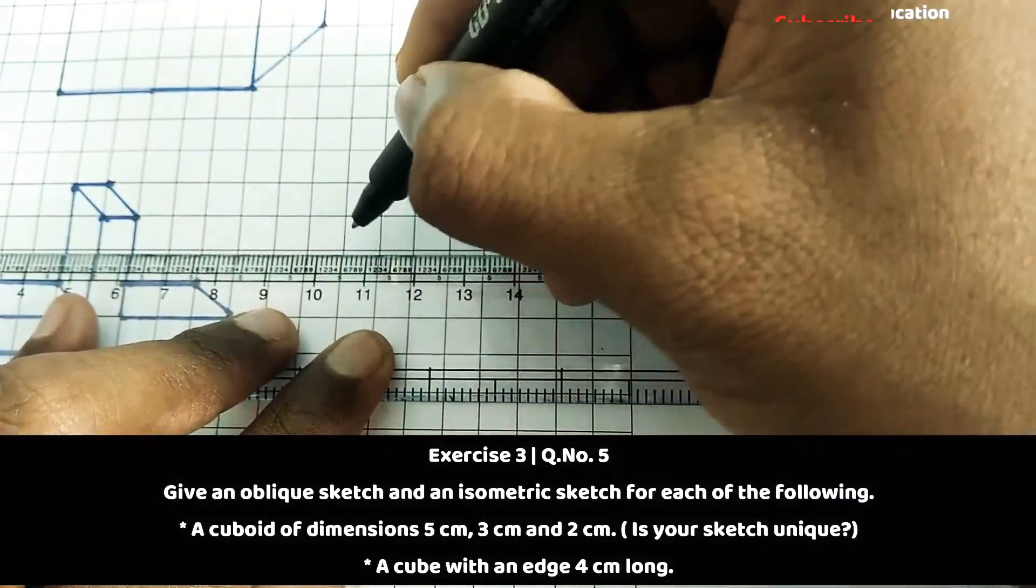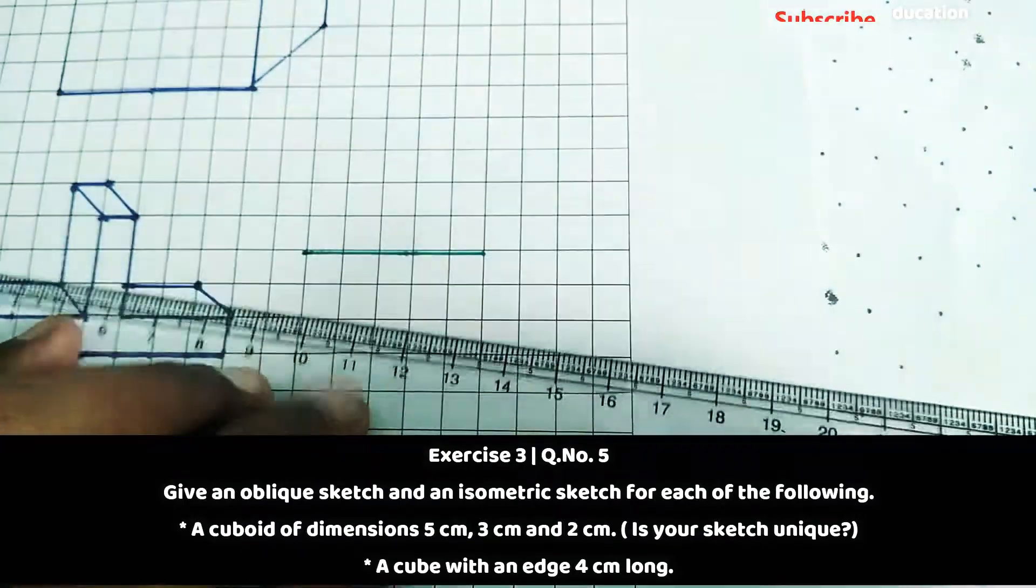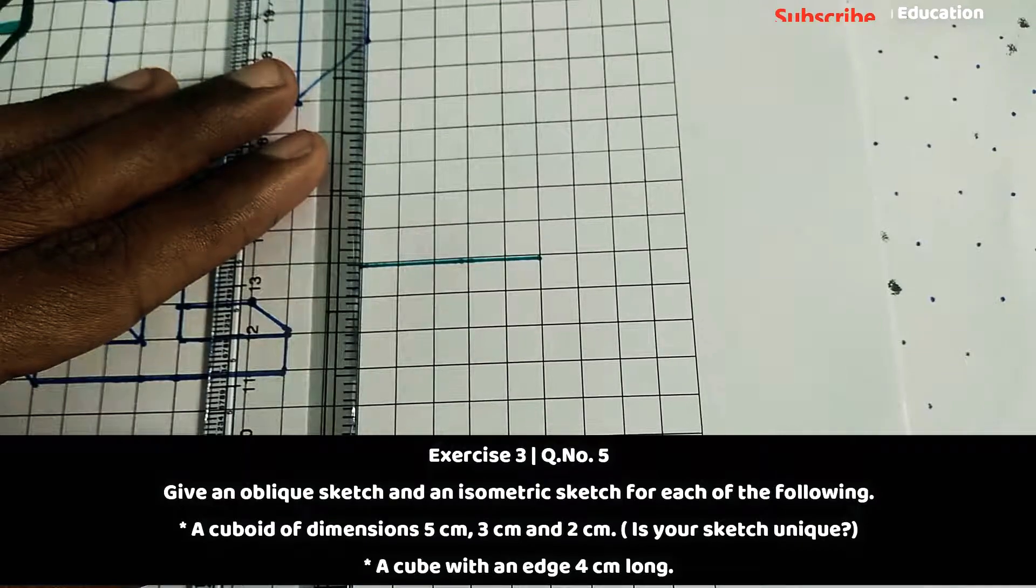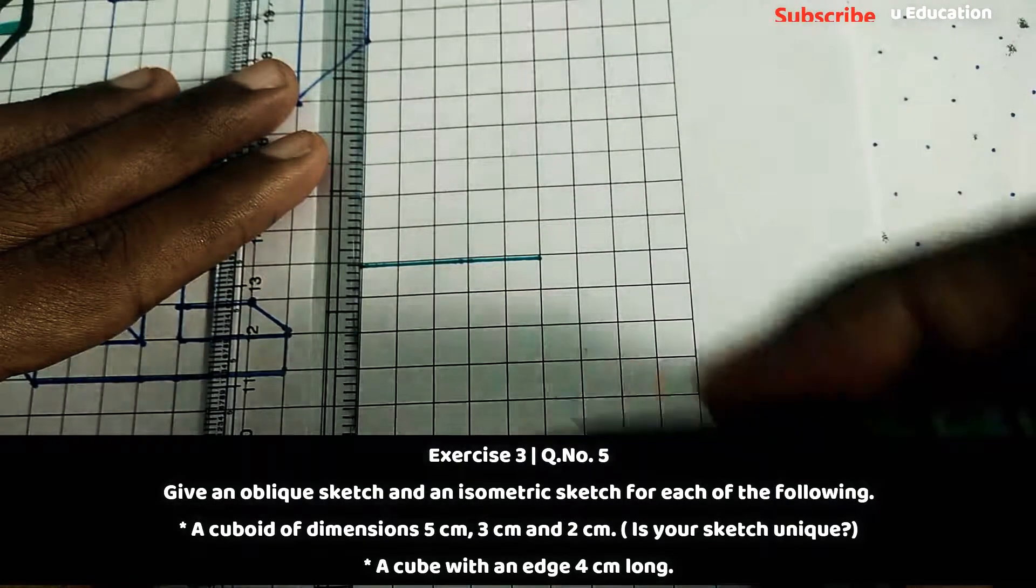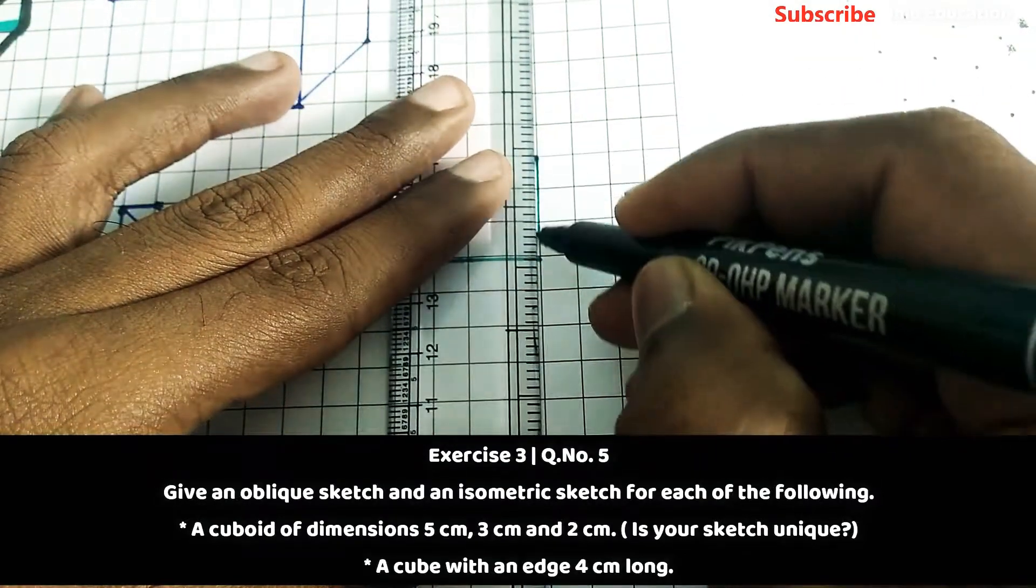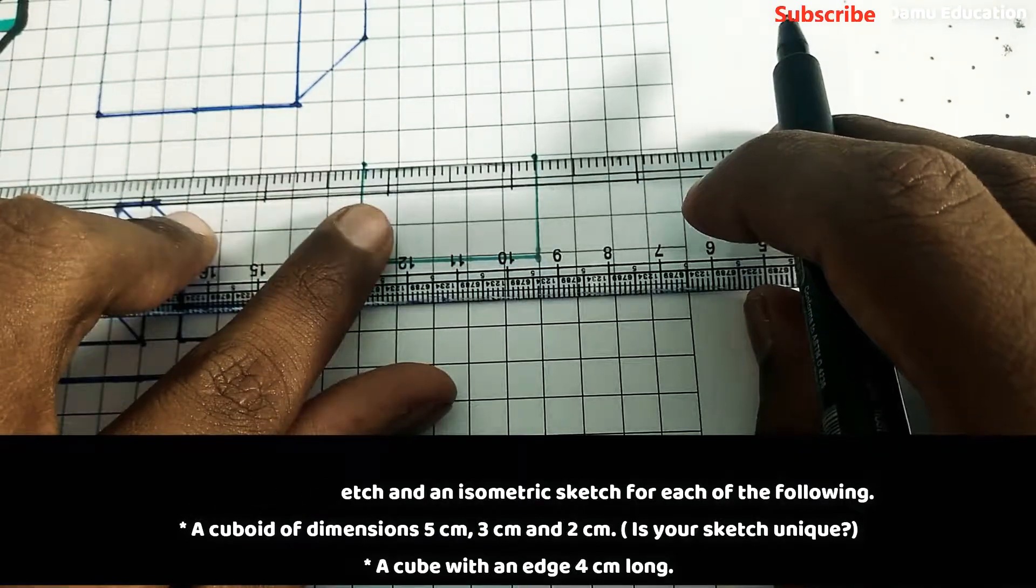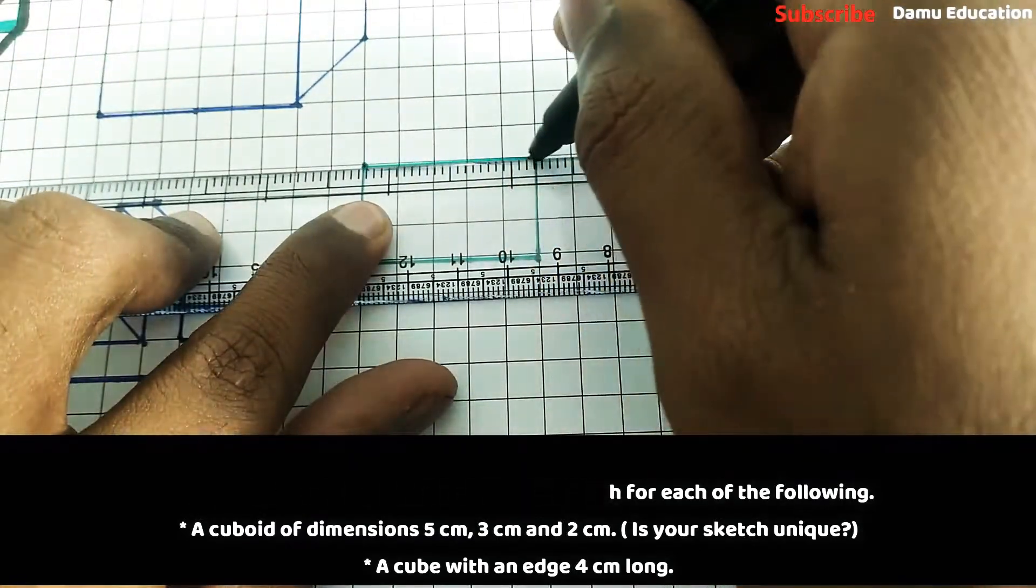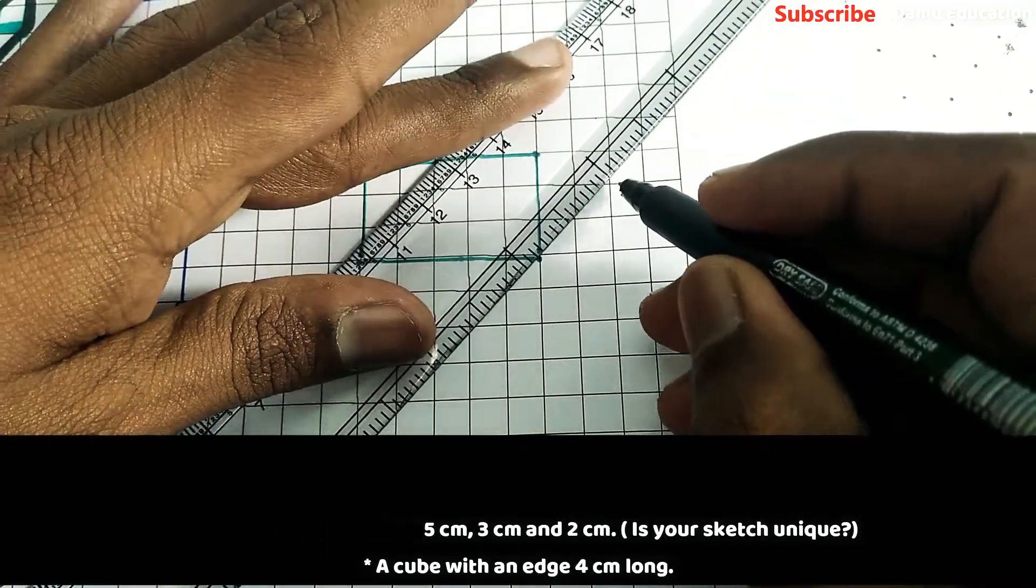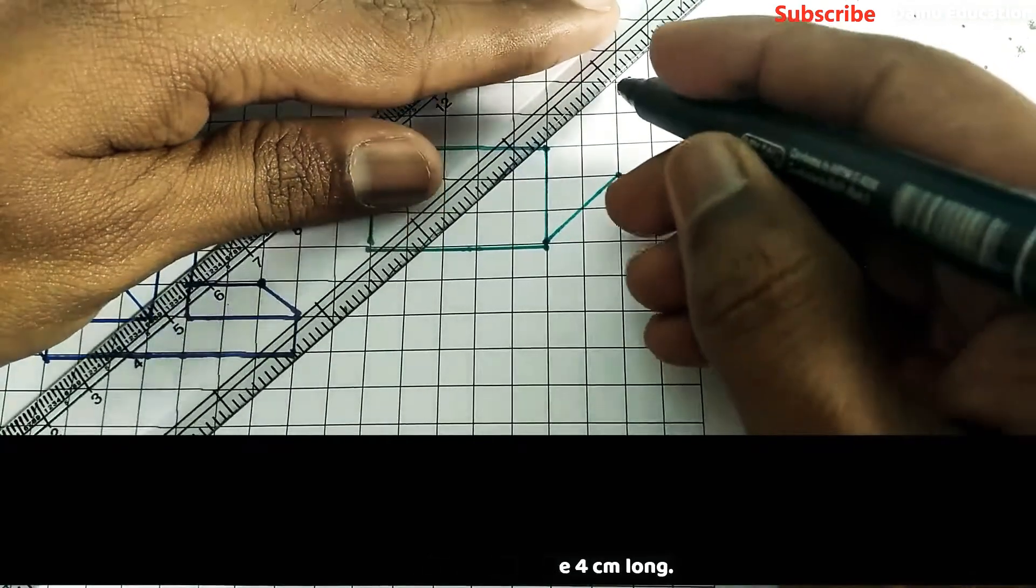It will be like this: 3 centimeters. Actually, the depth given is 2, so taking 1 is enough, but you can take 2 centimeters or 1 centimeter. Let's take 2. So here it will be a cuboid in graph sheet.